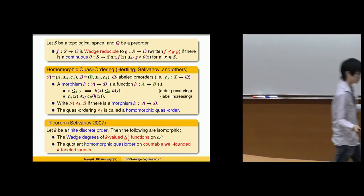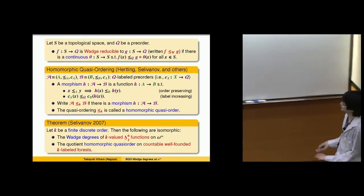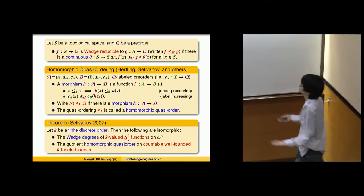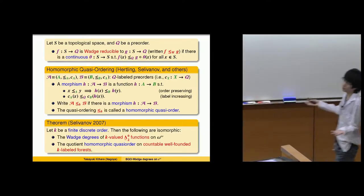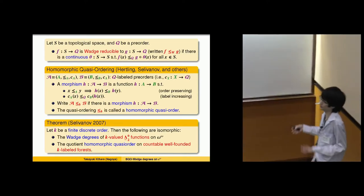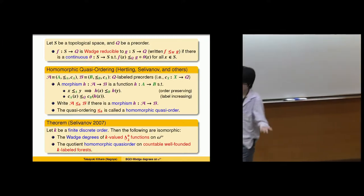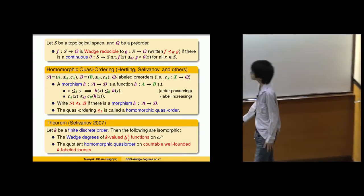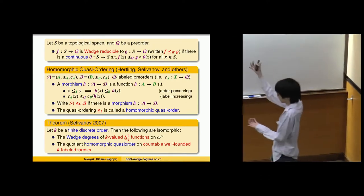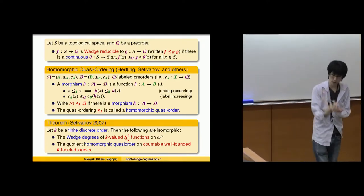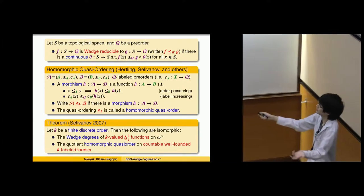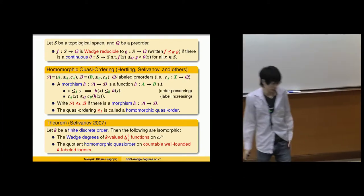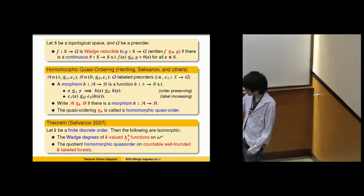This is Celabarany's result from 2007, but it is only for delta-0-2 measurable functions. The reason delta-0-2 functions connect to well-founded forests is simple: delta-0-2 is a kind of limit approximation procedure, and limit computation with approximation procedures can be described by well-founded trees. This is the essential reason for this theorem.